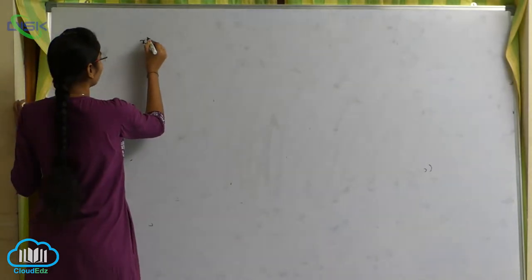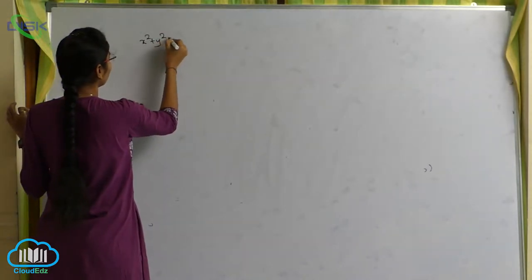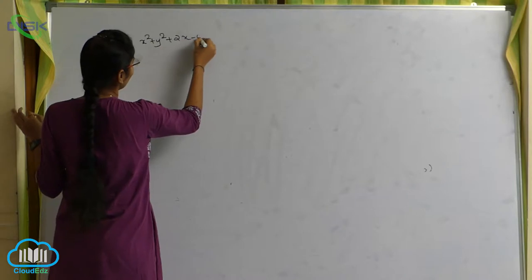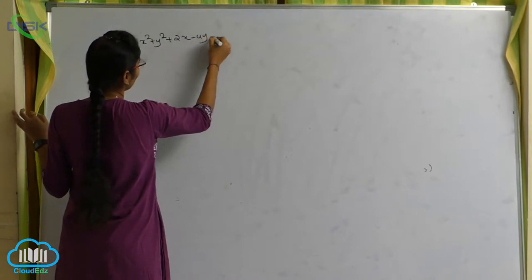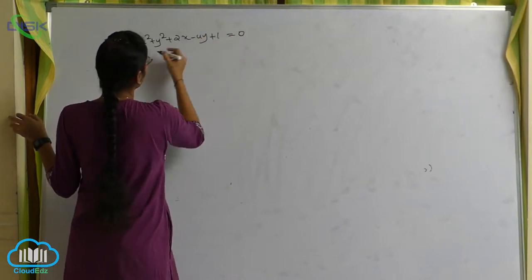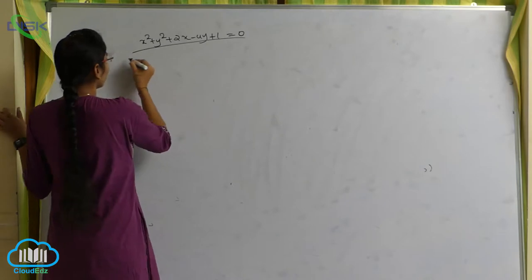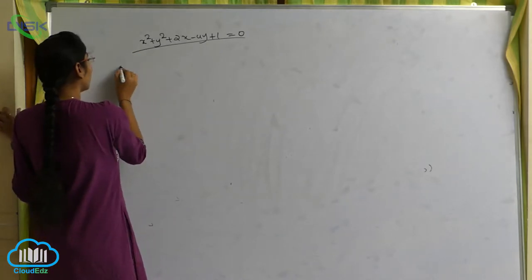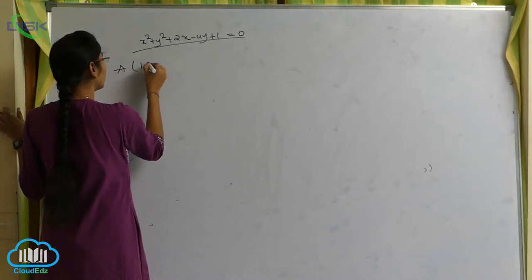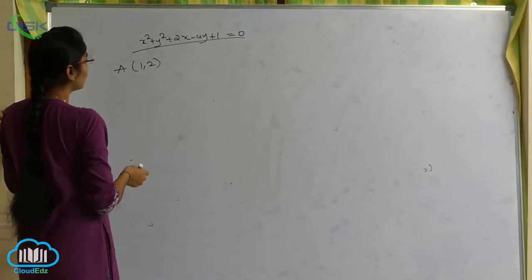x squared plus y squared plus 2x minus 4y plus 1 is equals to 0. Consider this equation — what is the a value to start with? 1.